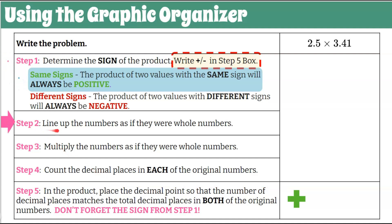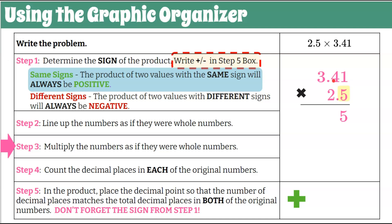Step two: lining up the numbers as if they were whole numbers. We're going to take the one with the most digits and put it on top. This has three digits, so 3.41 goes on top and we line up 2.5 underneath. We're going to start at the right with that five. Five times one is five; five times four is 20 — bring the zero and carry the two; five times three is 15 plus two is 17. Now we move to the next digit, which is two. Two times one is two; two times four is eight; two times three is six.